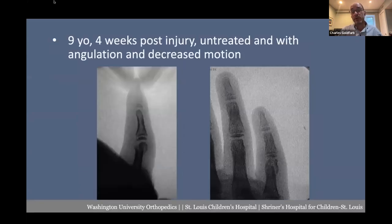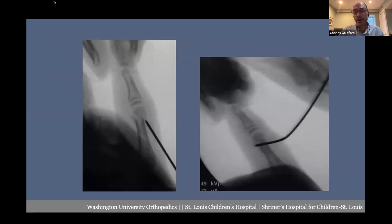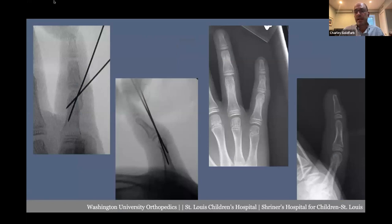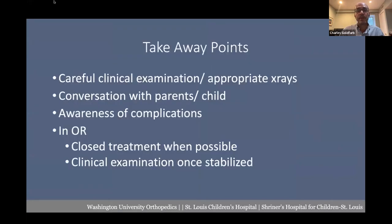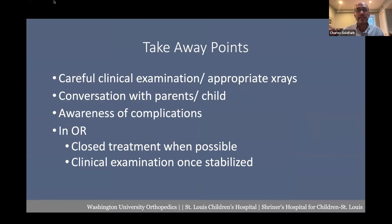These fractures can be straightforward but not always, because of subacute or chronic fractures with significant displacement. Percutaneous osteoclasis, as taught in Boston and Philadelphia, can be an effective technique to minimize the risk of AVN and obtain anatomical reduction. My takeaways: careful clinical and x-ray examination, conversation with the family and when appropriate the child, be aware of complications to minimize risks, keep things closed in the OR if possible, and after treatment always reassess — simulate wrist motion and finger flexion with both tenodesis and squeezing the forearm.